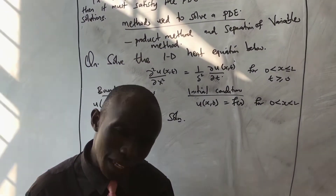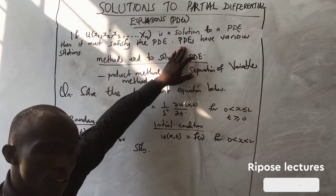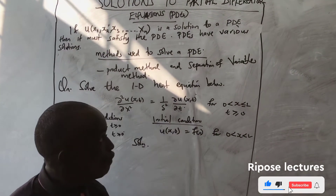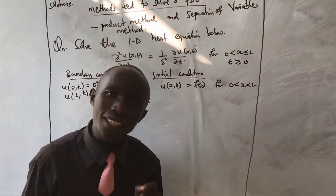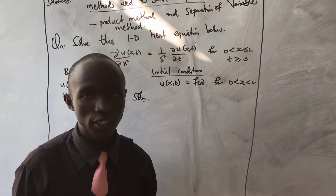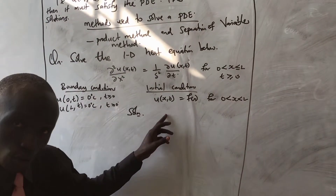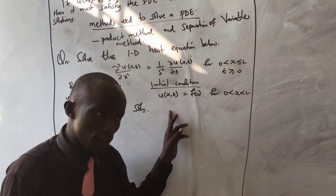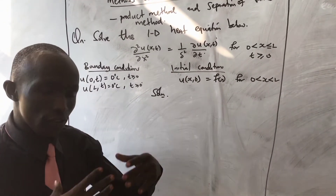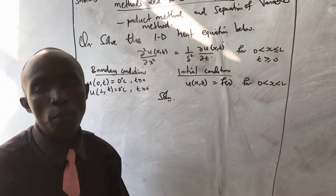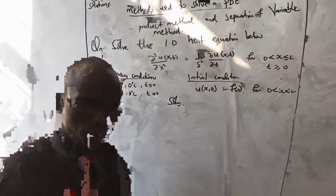What you must know is that a PDE has very many solutions — there are various solutions. However, not all solutions of the PDE are the solution. A solution to a PDE must satisfy both the boundary conditions and the initial conditions. You may get many solutions, but only those satisfying both conditions qualify.